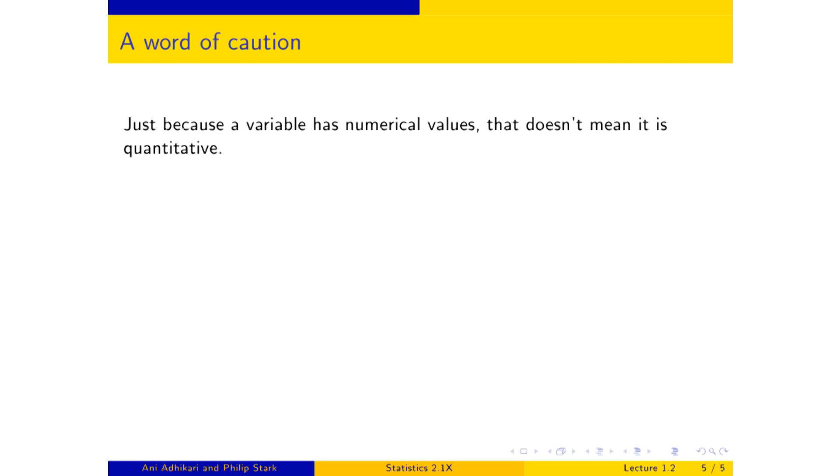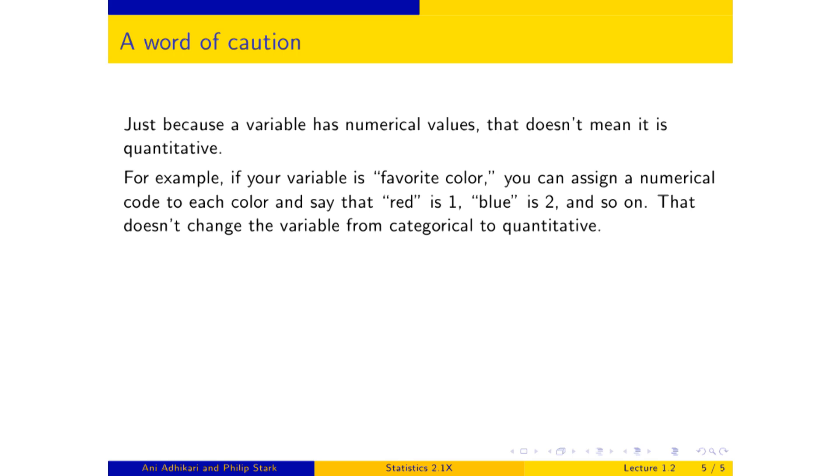And a word of caution, just because a variable takes on numerical values, that doesn't mean it's quantitative. For example, if your variable is favorite color, and your possible values are red, blue, and so on, you're perfectly free to assign a numerical code to those values. So you could decide that red is going to be one, blue is going to be two, and so on. But by doing that, you didn't change that variable from categorical to quantitative.